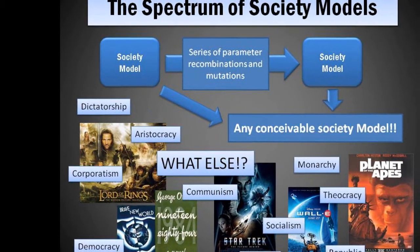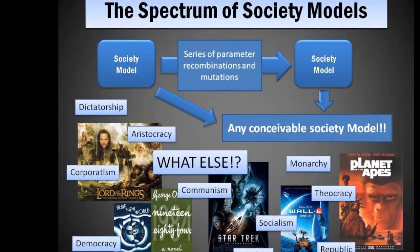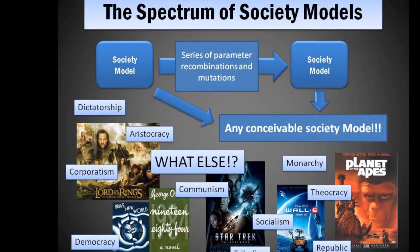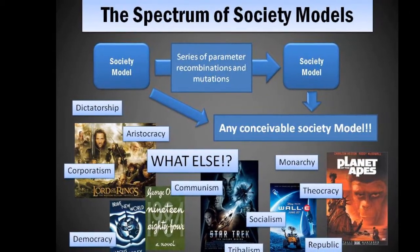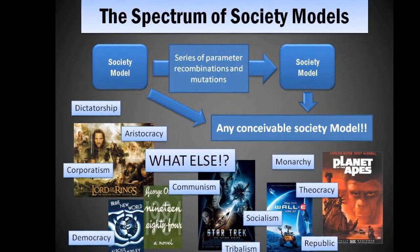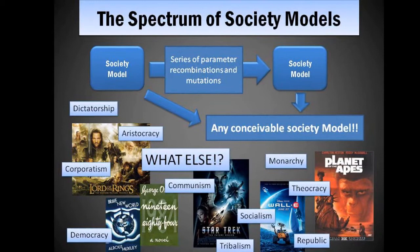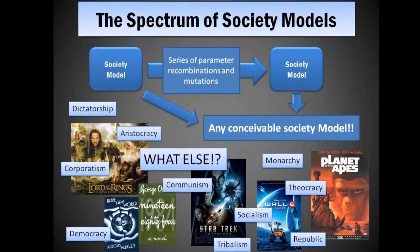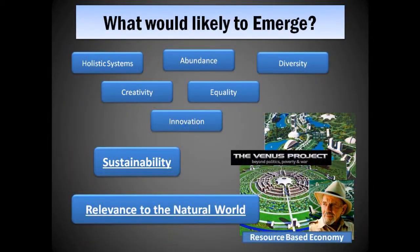Given that any social model is able to transform to any other social model with a series of parameter recombinations and mutations, anything is possible. But realistically, what would likely emerge? Well, just look at nature: diversity, holistic thinking, abundance, creativity, equality. No one really decides which organisms succeed or perish.